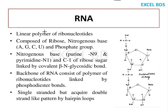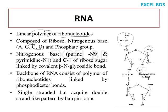RNA is a polymer of ribonucleotides. You can see the structure — the OH group is present. In DNA it is an H group, meaning oxygen is removed, which is why we call it deoxyribose. The nucleotide consists of a nitrogenous base, a ribose sugar moiety, and a phosphate group. The nitrogenous bases are adenine, guanine, cytosine, and uracil. The backbone consists of ribonucleotides linked by phosphodiester bonds.